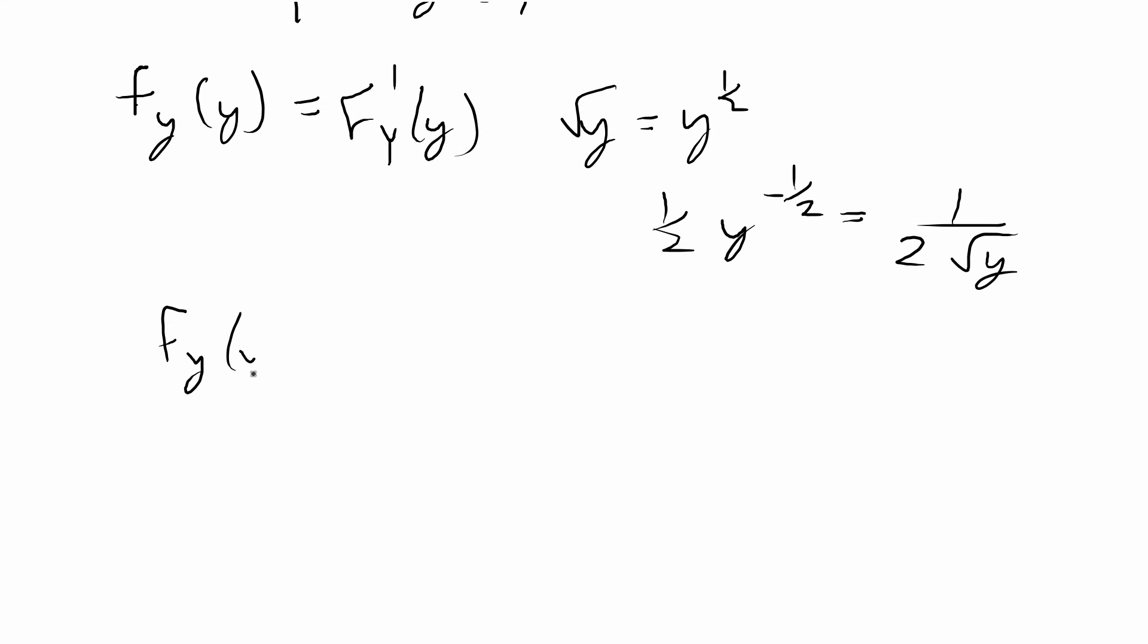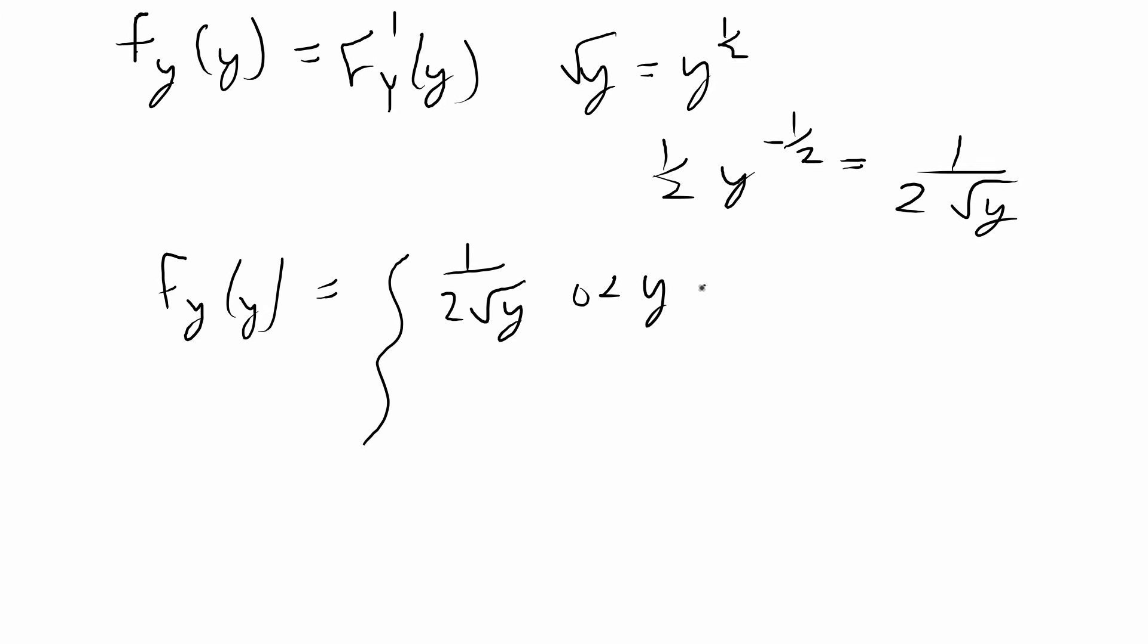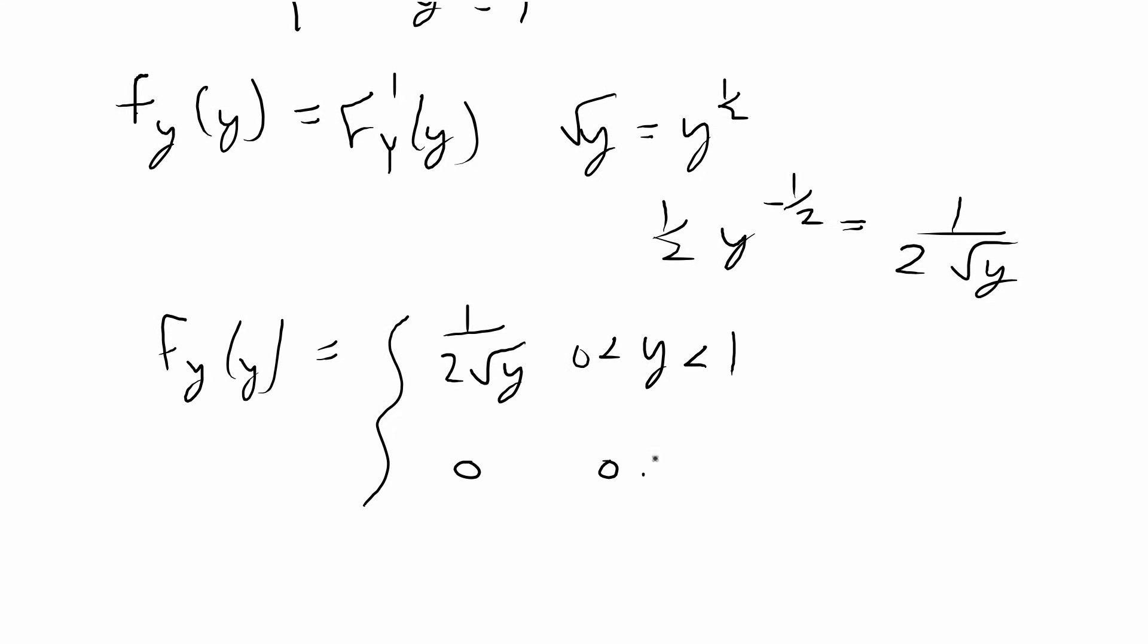So for f_Y(y), we have 1 over 2 times the square root of y. y cannot be 0 because then the denominator for this fraction will be 0. So y has to be greater than 0 and we have from our CDF of Y that this goes to 1 and then it's going to be 0 otherwise.